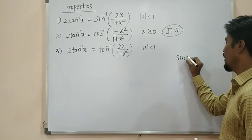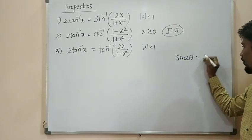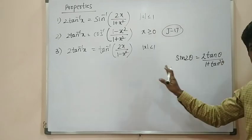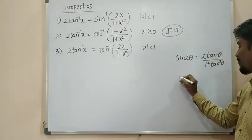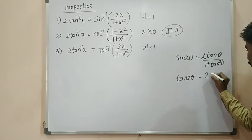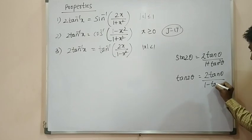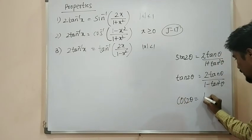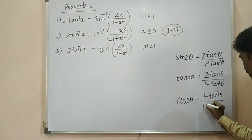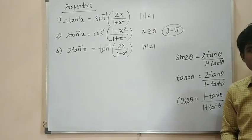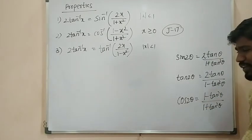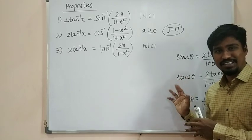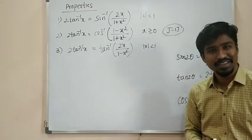Now we recall first-year trigonometric formulas. sin 2θ is equal to 2 tan θ divided by 1 plus tan squared θ. tan 2θ is equal to 2 tan θ divided by 1 minus tan squared θ. cos 2θ is equal to 1 minus tan squared θ divided by 1 plus tan squared θ. These formulas are important. We will try to solve problems using them.